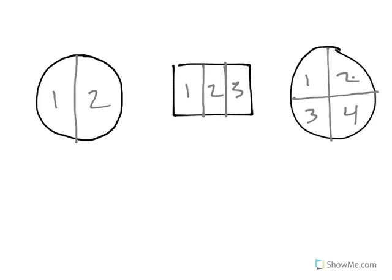What I have here are three shapes that are broken into a different number of equal pieces. Starting on the left, I have a circle broken into two equal pieces.